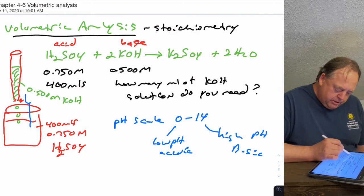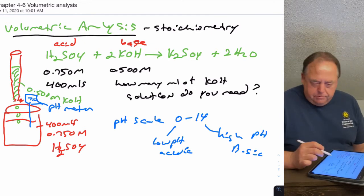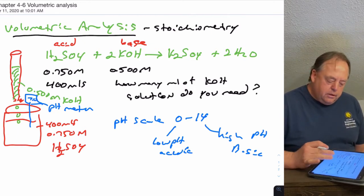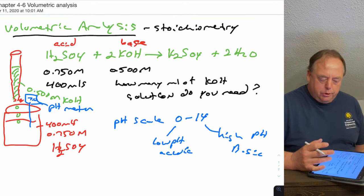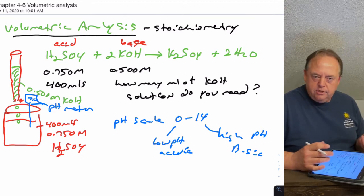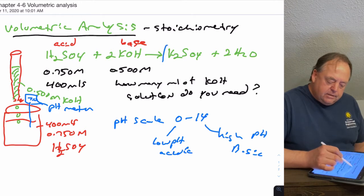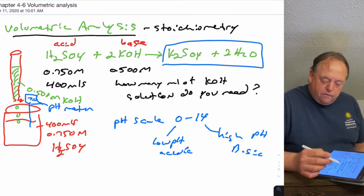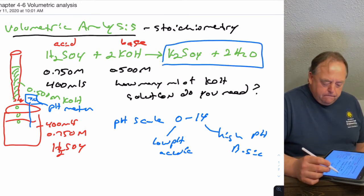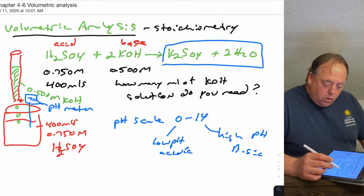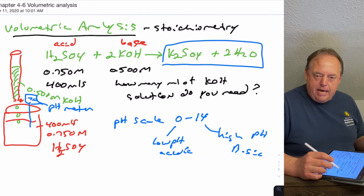One way that you could monitor this reaction would be if you had a pH meter. When the pH meter read 7.0, then there would be no more acid left, so you would have added enough KOH to react with all of the acid, and then you would just have potassium sulfate and water at that point. Basically, what we're trying to calculate in this first question is how much KOH do you need to add to react with all of the H2SO4.